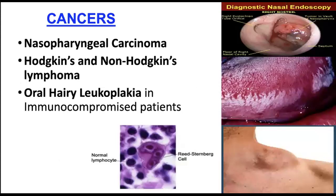Apart from Burkitt's lymphoma, other cancers associated with Epstein-Barr include nasopharyngeal carcinoma, Hodgkin's lymphoma, and non-Hodgkin's lymphoma. Hodgkin's lymphoma is a type of cancer that develops in the lymph system, characterized by the presence of the Reed-Sternberg cell, which is a hallmark of Hodgkin's. Non-Hodgkin's lymphoma is a disease where malignant cells form in the lymph system; it can be indolent or aggressive.